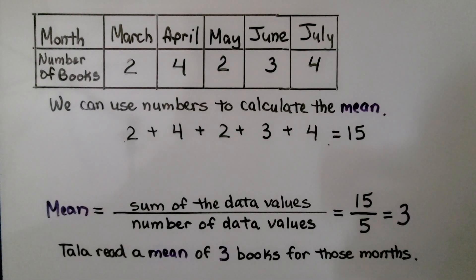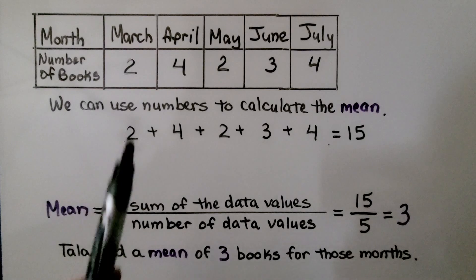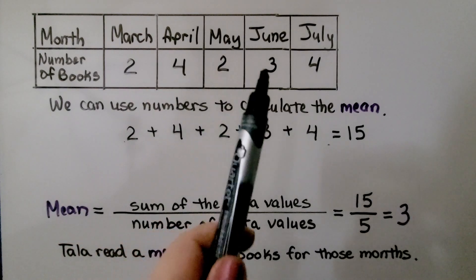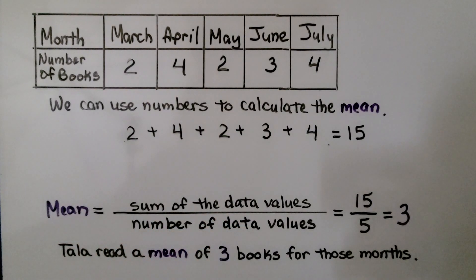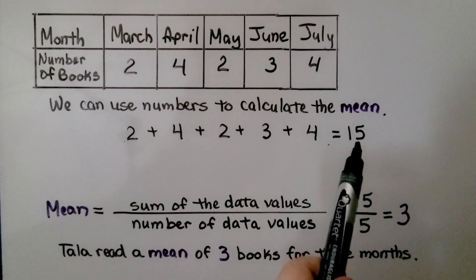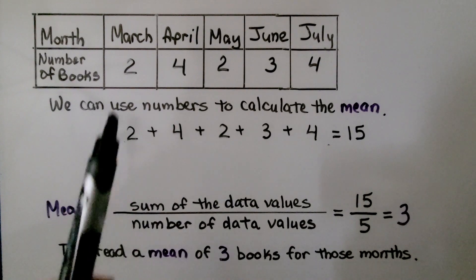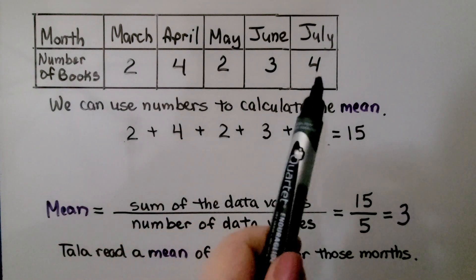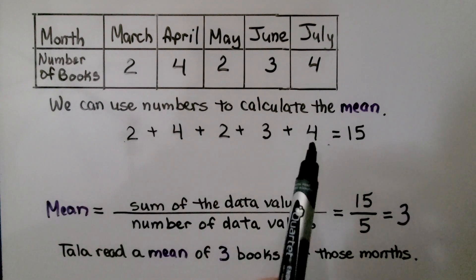We can use numbers to calculate the mean. We know in March it was two, April was four, May was two, June was three, July was four. We use these numbers as addends. They equal fifteen and we had one, two, three, four, five numbers that we added.